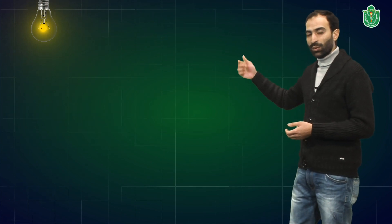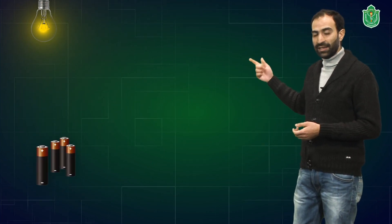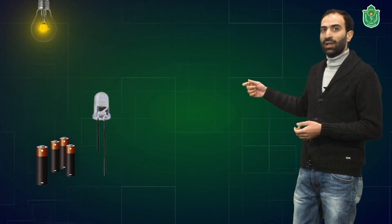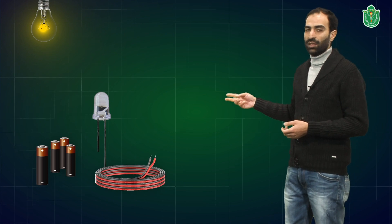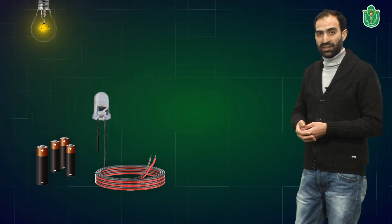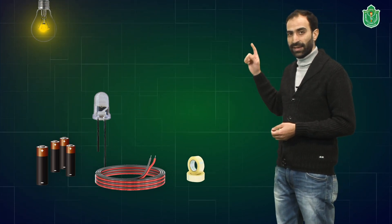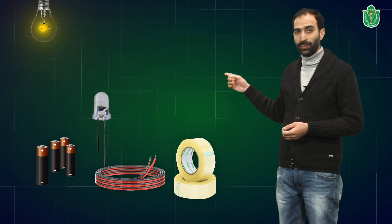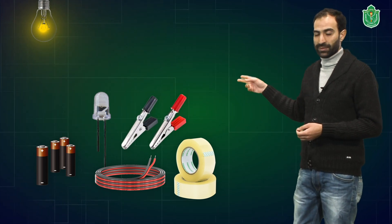We are going to require a couple of cells, an LED, two connecting wires of about 15 centimeters in length. We are also going to require an adhesive tape and two crocodile clips.